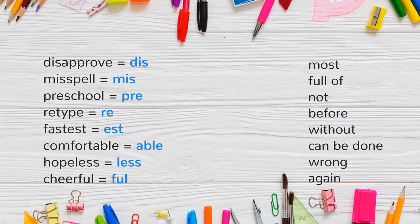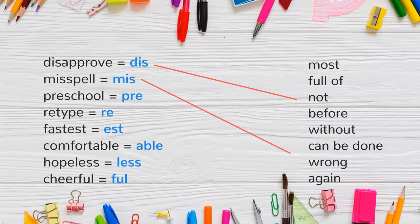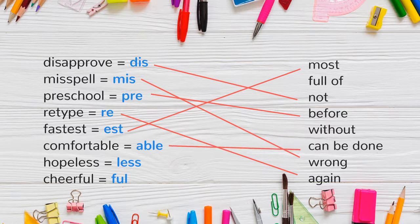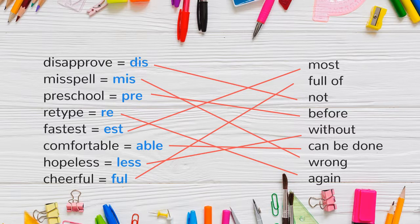Now it is time for our last activity. For this one, please match the affix with its meaning based on the word that is given. Dis means not. Mis means wrong. Pre means before. Re means again. Est means most. Able means can be done. Less means without. Ful means full of.